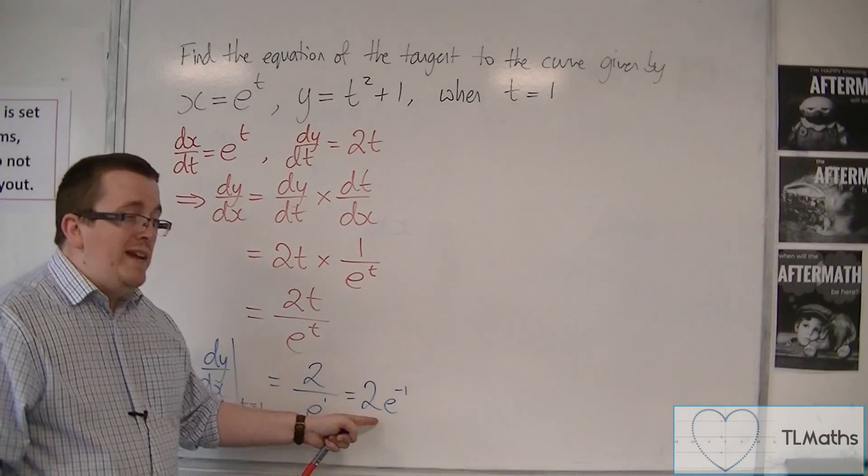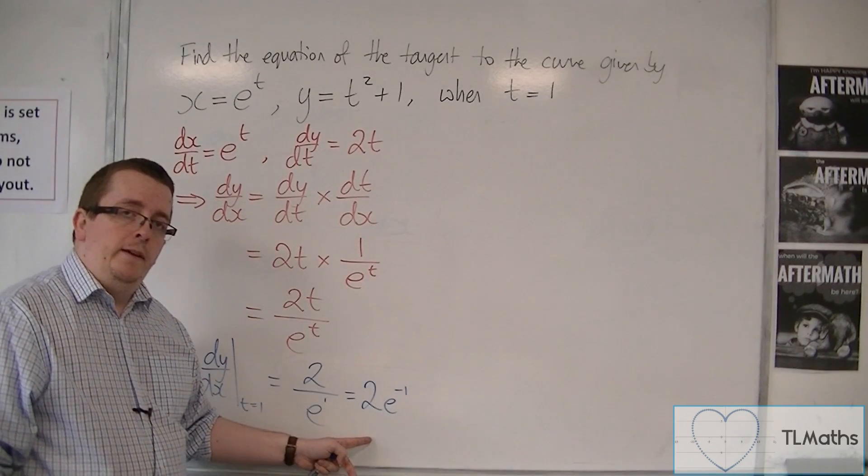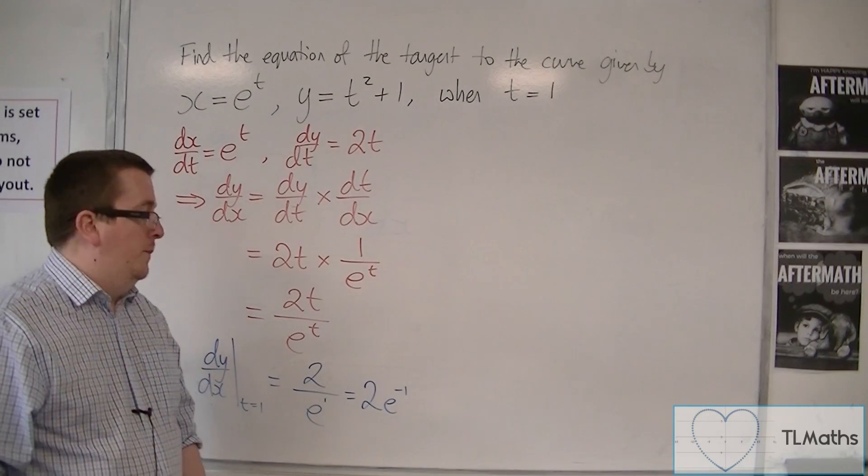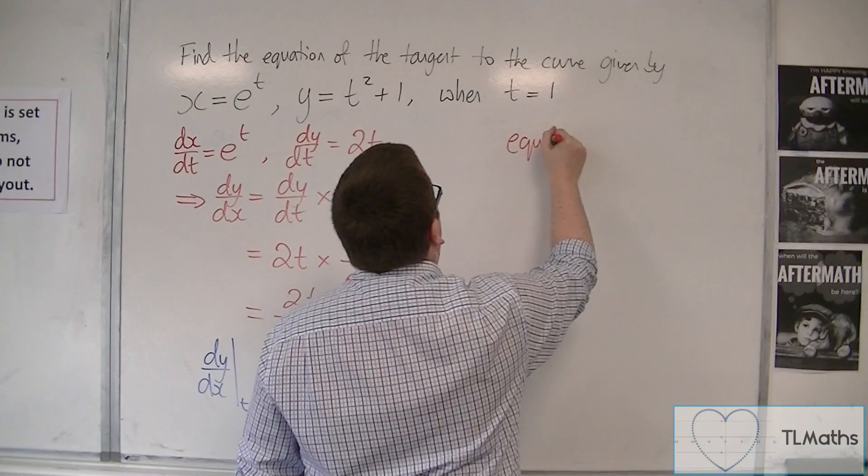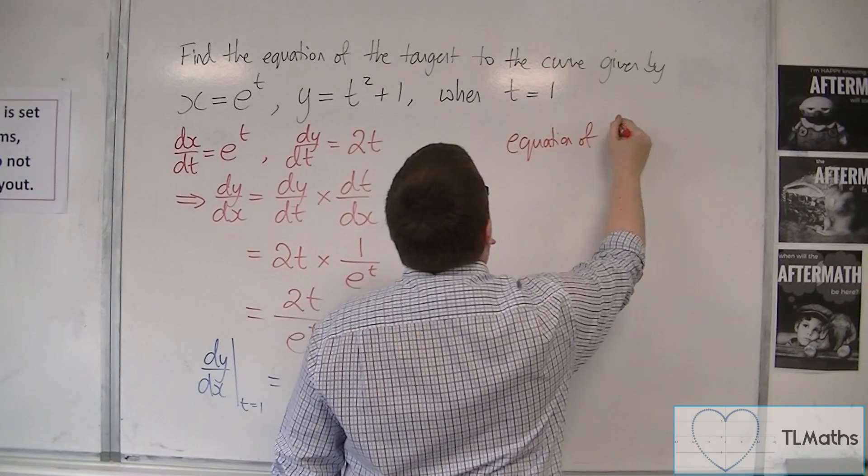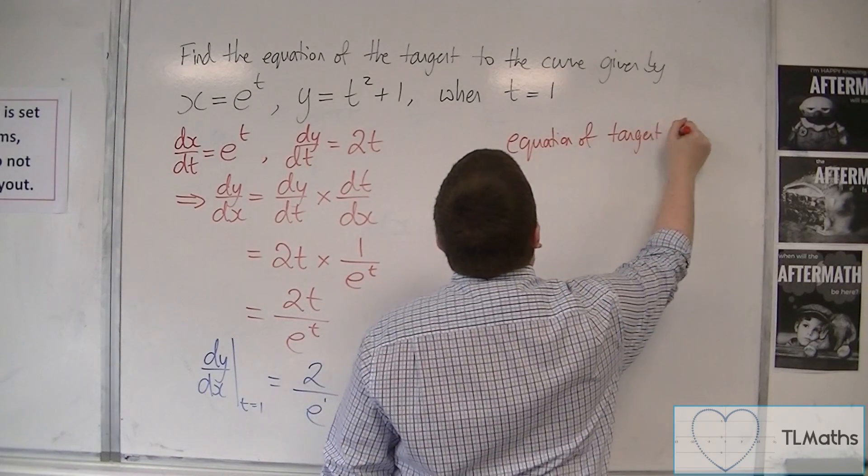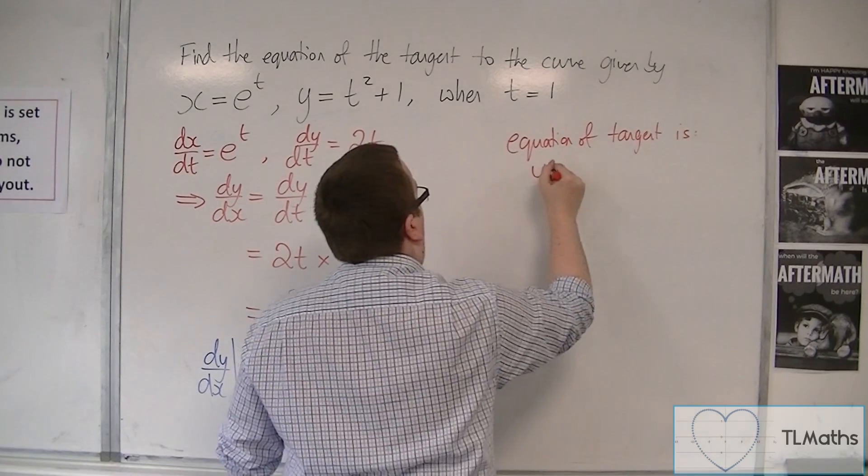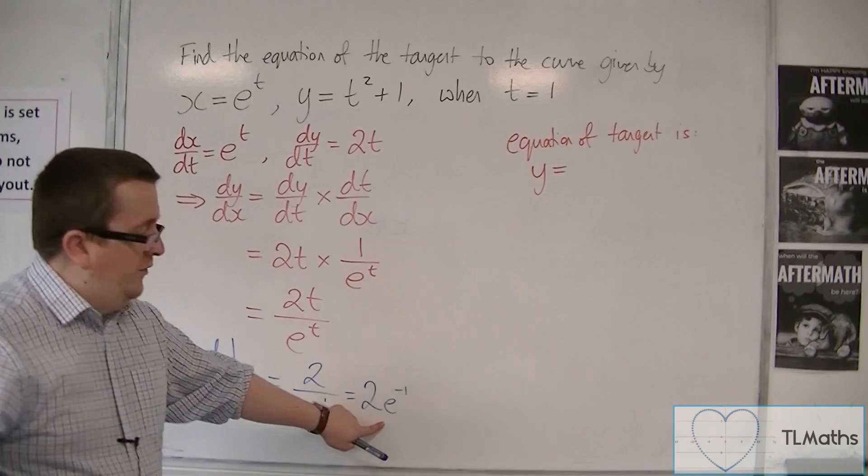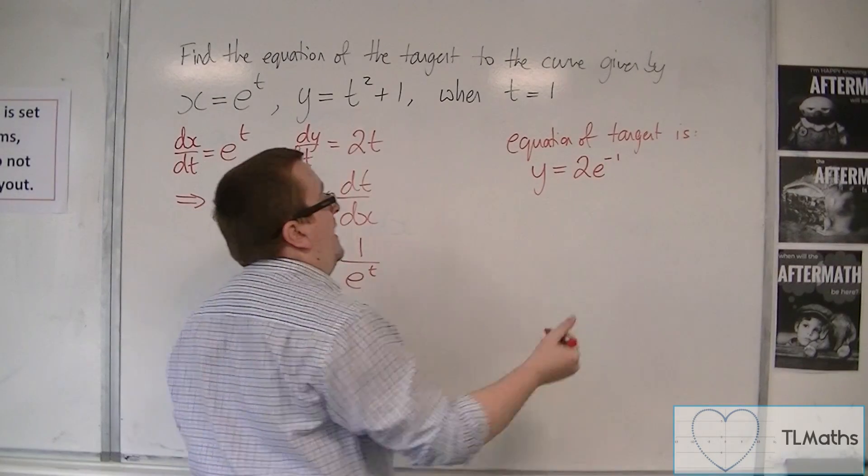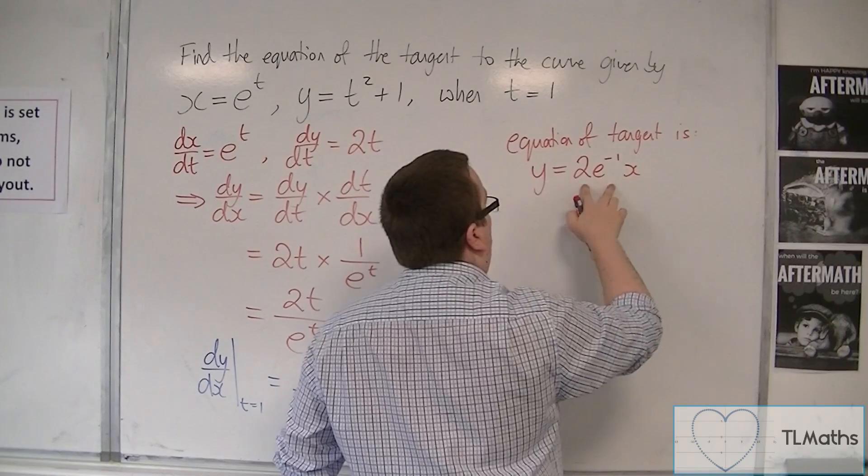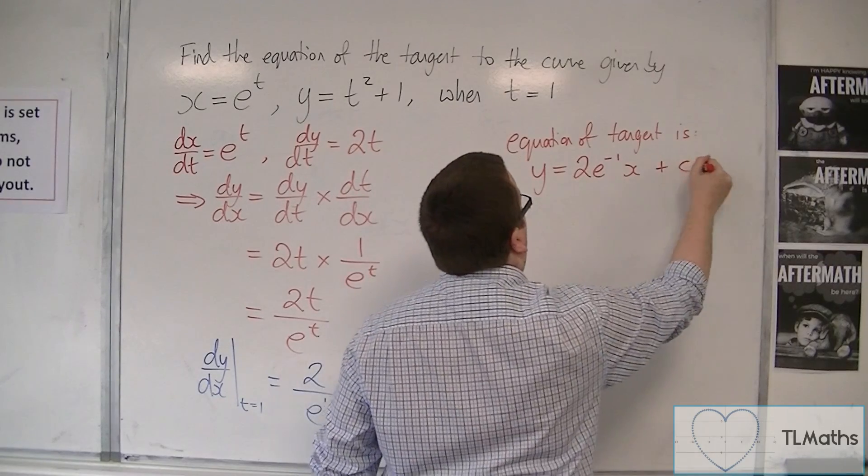So that is the gradient of the tangent at the point that I'm looking for. So we can say that the equation of the tangent is y equals 2e to the minus 1 times x. So 2e to the minus 1 is the gradient plus c.